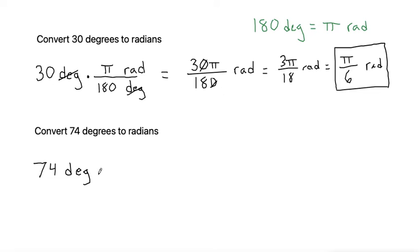we're going to use our same conversion factor. We want to put degrees on the bottom, so it cancels, and radians on the top. And again, our numbers follow our units. So 180 will go on the bottom with degrees, and π goes on the top with radians.